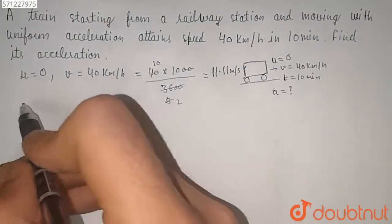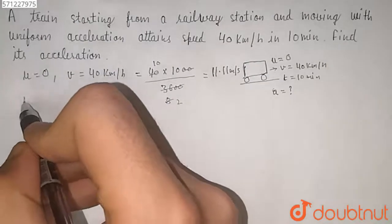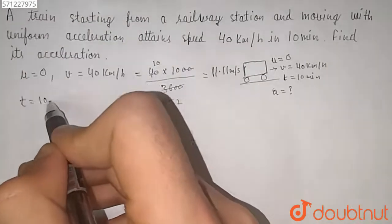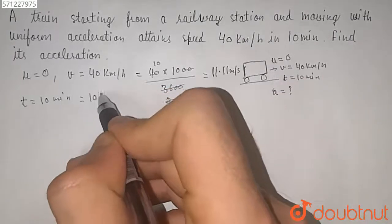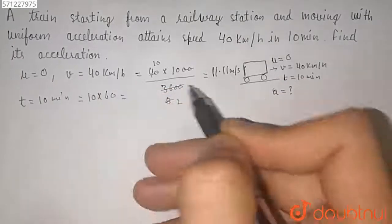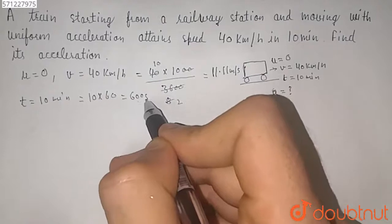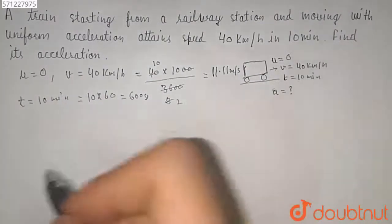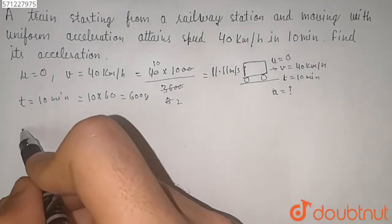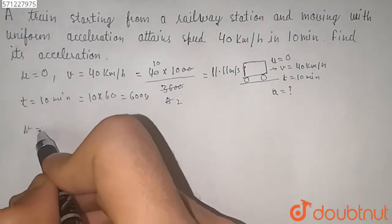This is our velocity, and we have given also the time which is 10 minutes, so 10 minutes equals 10 into 60, which is equal to 600 seconds. So these are the things which are given to us. Now we have to find the acceleration, so we know that v is equal to u plus at.